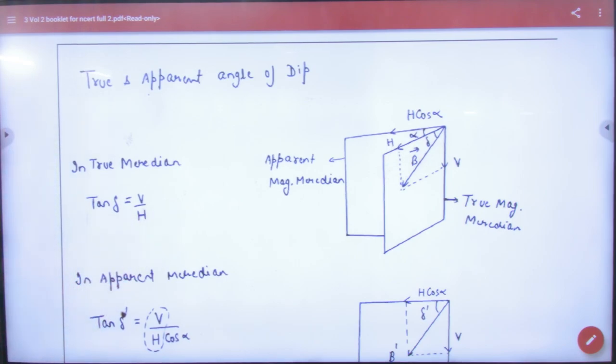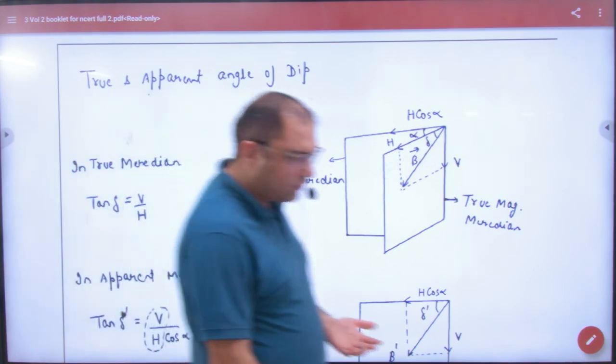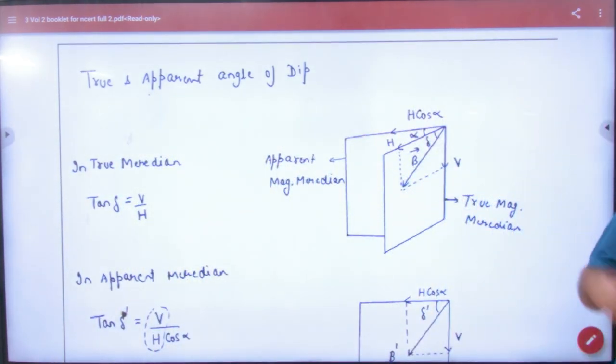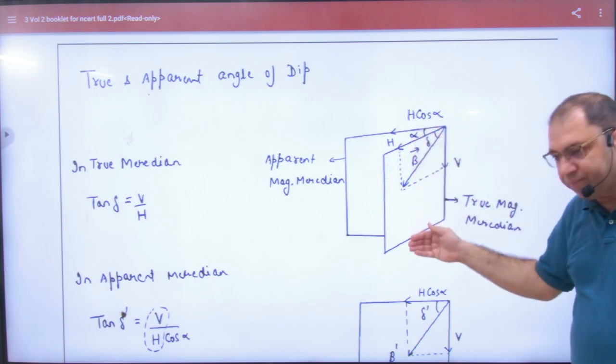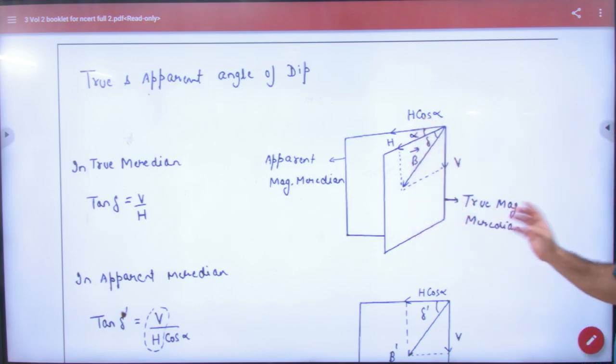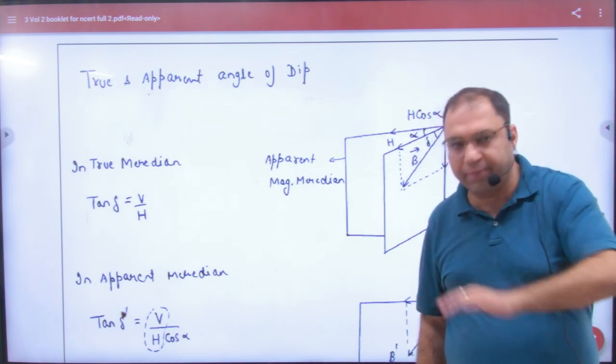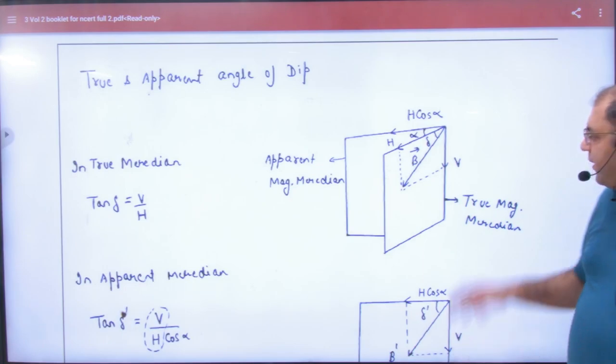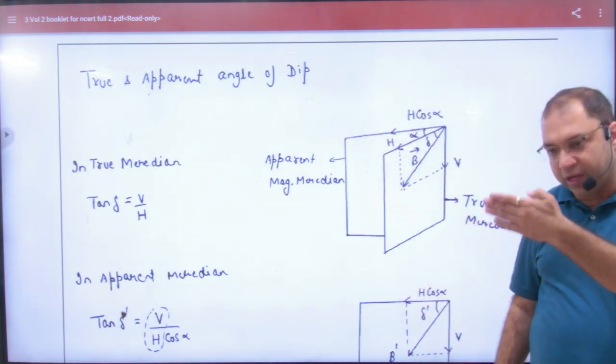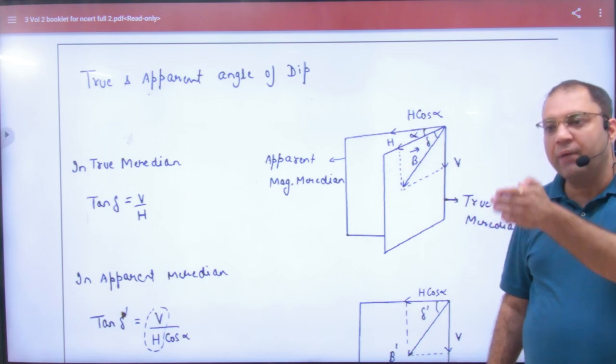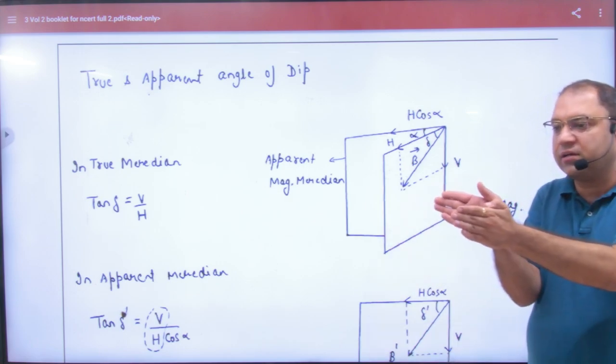So basically what is it? If you think that actually a magnetic line of force is entered from a point and you make a meridian, what do you call this meridian? True magnetic meridian. It is a true magnetic meridian because it is a true line. Now some student says I have an imaginary meridian with it. This is your actual angle of meridian. You have an imaginary meridian with it, like this.